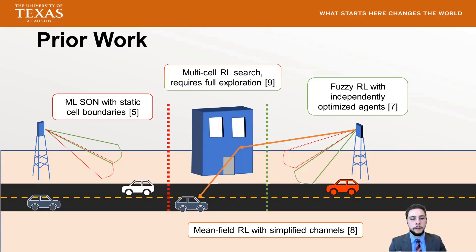There's also been multi-cell and mean field theory applied, but they relied on simplified channels where things like multipath and reflections aren't included, or they required a very long exploration search — testing out all different configurations. A network operator can't really do that because it would take too long, and many configurations will result in very poor performance. This opens the way for our algorithm, which trades off between different choices and optimizes in a multi-objective form.